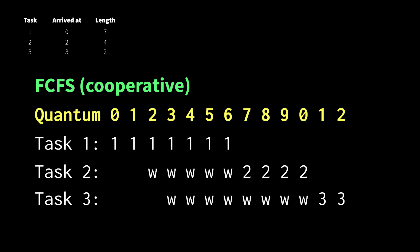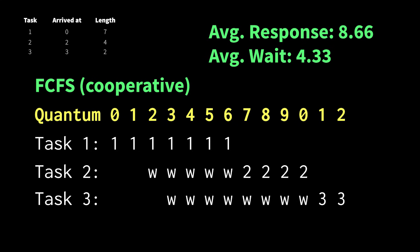In first come, first serve, the tasks finish in order. This is a particularly bad case because the first task was a long one, so the others have to wait. It took 13 quanta to run all the tasks. We have average response times of 7, 9, and 10, giving us an average of roughly 8.66. Our wait times are 0, 5, and 8 — so on average, tasks are waiting 4.3 quanta.